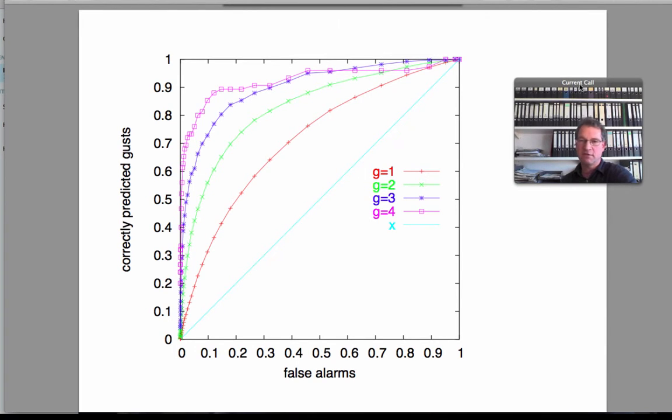The nice thing with this normalization is that if we had a completely stupid prediction scheme which randomly would issue alarms, the hit rate and the false alarm rate were identical and that would be the diagonal in this representation. A useful scheme has to overcome the diagonal in the full range of sensitivity.